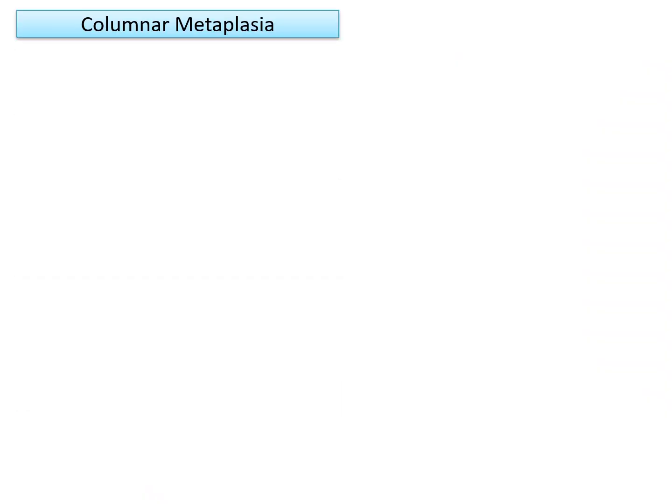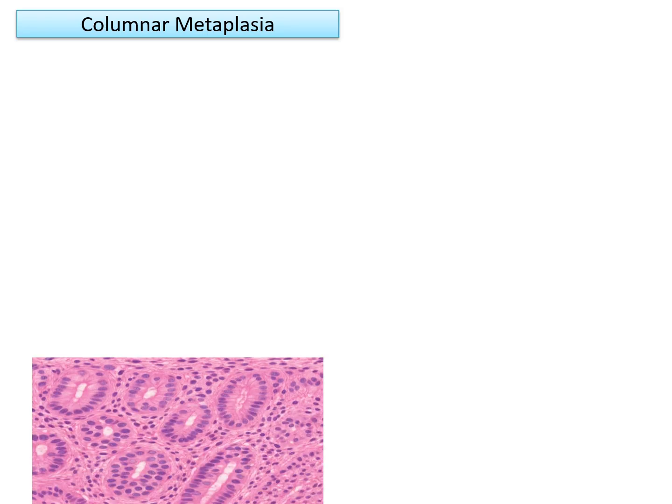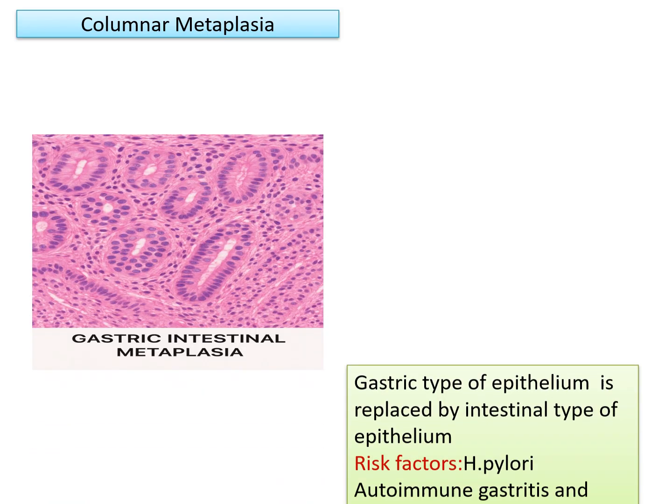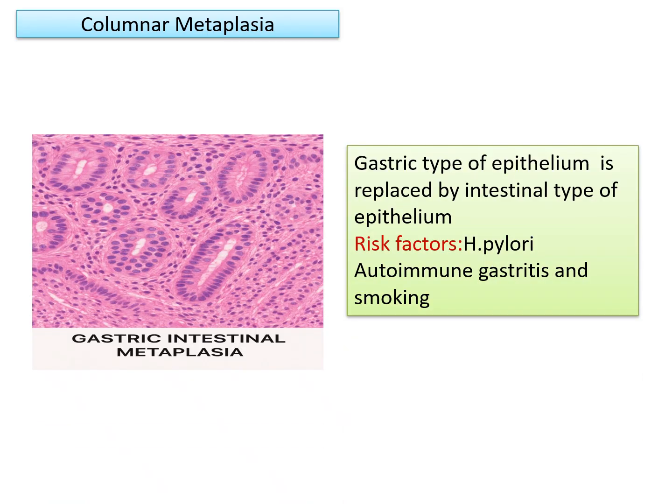Another example of columnar metaplasia is gastric intestinal metaplasia, where gastric type of epithelium is replaced by intestinal type of epithelium. Risk factors associated with this type of metaplasia are H. pylori (Helicobacter pylori) infection, autoimmune gastritis, and smoking.